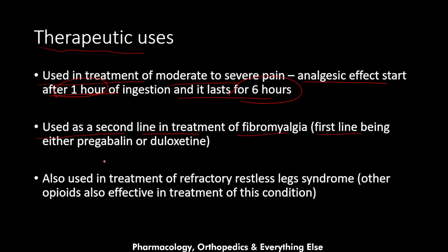Tramadol is used as a second-line treatment for fibromyalgia, with the first-line options being either pregabalin or duloxetine. It is also used in the treatment of refractory restless leg syndrome. While other opioids are also effective for this condition, tramadol is preferred because it is less addictive.